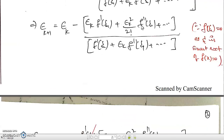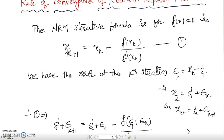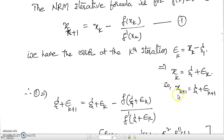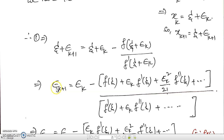Let me repeat. First, write the Newton-Raphson iterative formula: xk₊₁ = xk − f(xk)/f'(xk). The error formula is εk = xk − ξ, so xk = ξ + εk and xk₊₁ = ξ + ε_{k+1}. Substitute xk₊₁ and xk in the Newton-Raphson formula. After cancelling ξ, we get ε_{k+1} = εk − f(ξ + εk)/f'(ξ + εk). Now expand numerator and denominator in Taylor series about ξ.